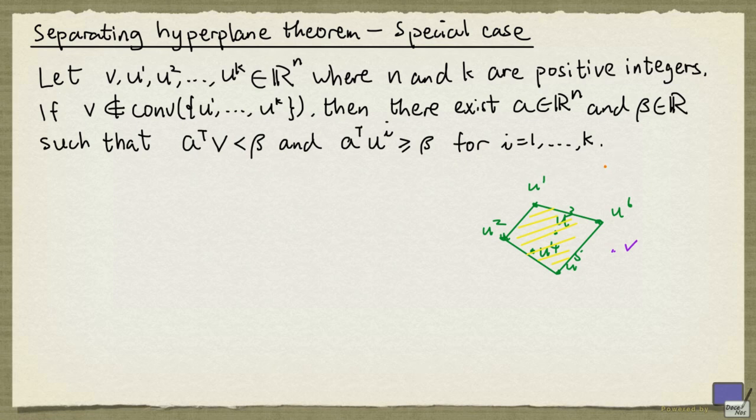So in this case, the inequality might look like this. So all the ui satisfy this inequality, and v doesn't. And this will be the hyperplane that sits between the set and the point v. So this hyperplane separates the u from the v, the u's are on one side, and v is on the other side.